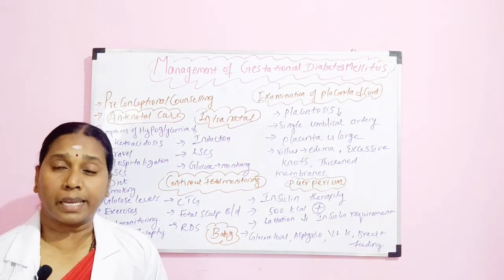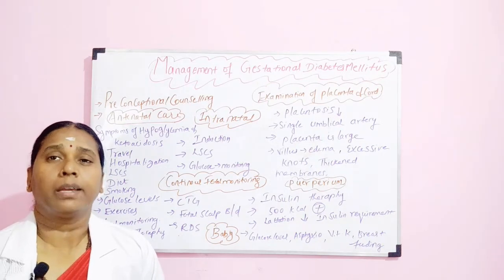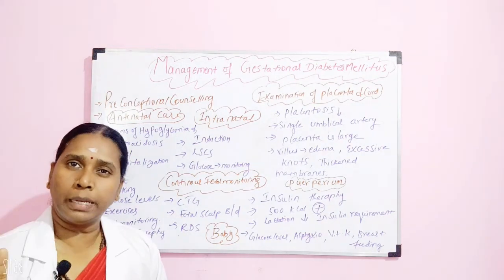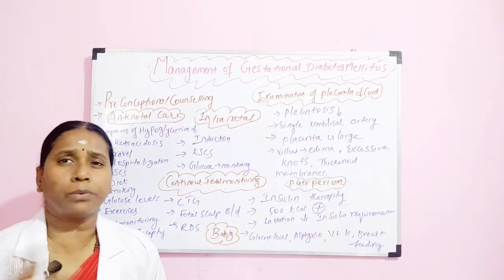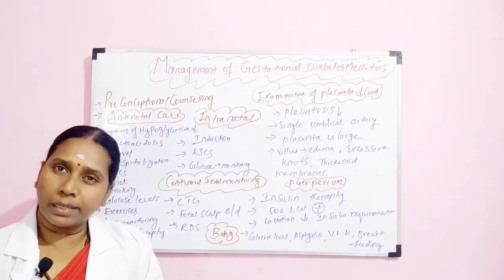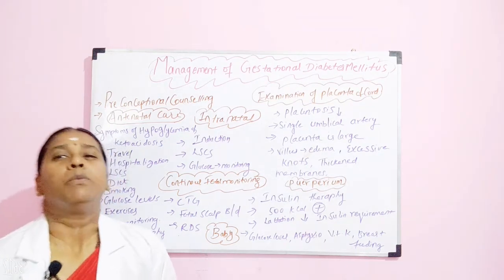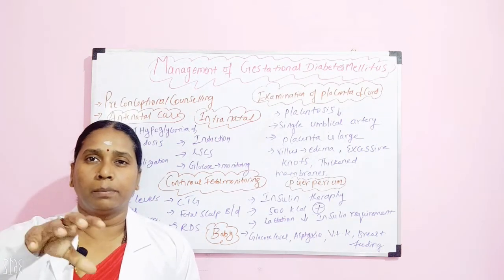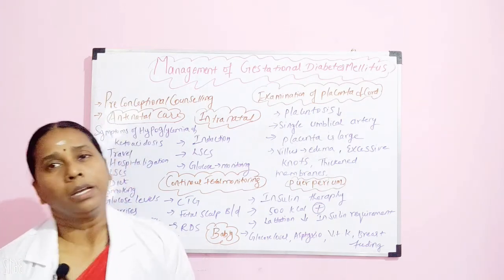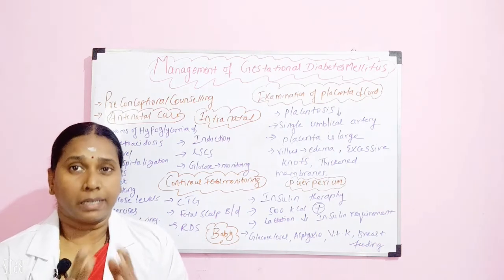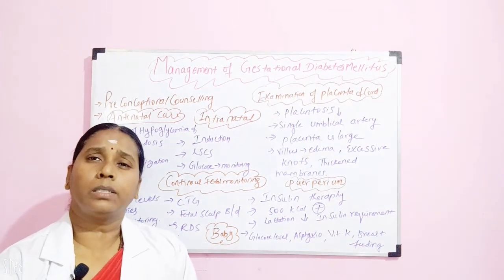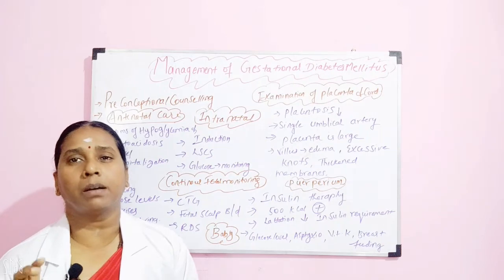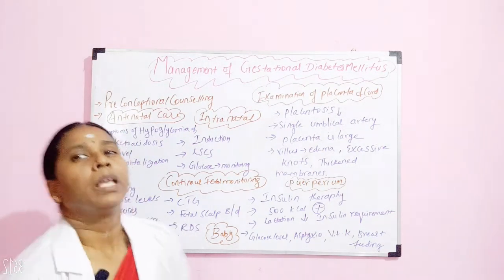Regarding hospitalization: if there are no problems, glycemic control is normal, diet and exercise are under control, and the baby's weight is normal, then you can plan to continue the pregnancy till 37 weeks before planning the labor process. However, if the mother is experiencing hypoglycemia, ketoacidosis, or any other complications, she has to be hospitalized immediately.